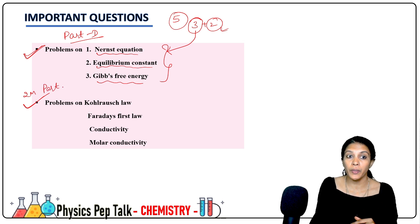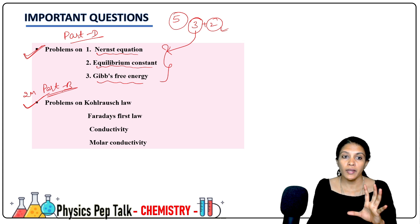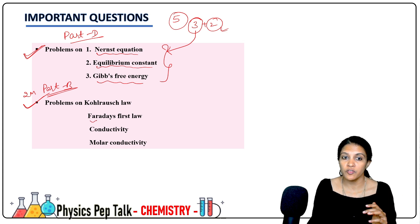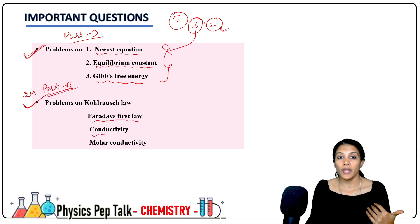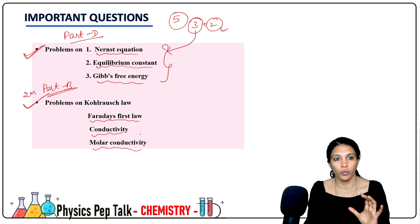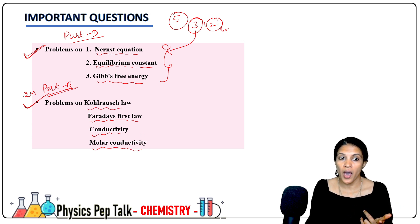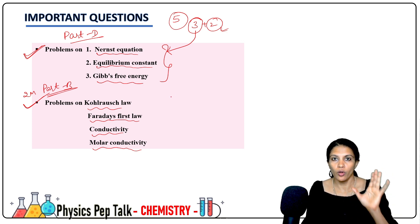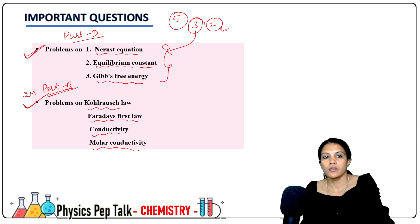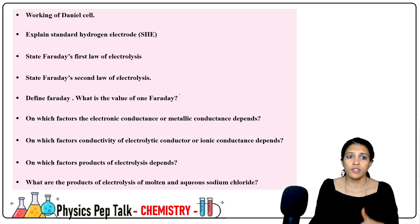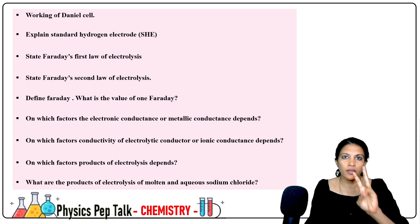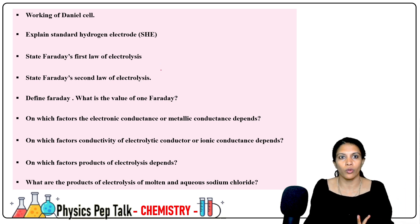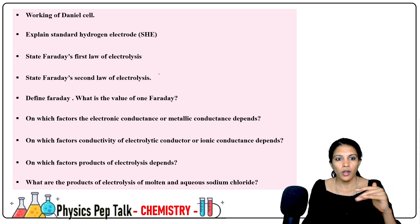Part B questions include: Coulomb's law, Faraday's first law, problems on conductivity, and molar conductivity problems. Here you have Part B 2 marks questions — numericals from electrochemistry. Then for theoretical questions you need to do 3 marks problems, 2 marks problems, and 1 mark questions.